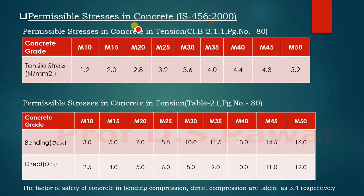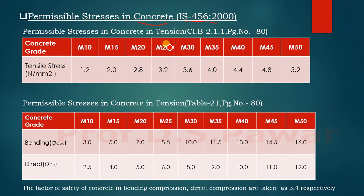These are the permissible or allowable stresses given in IS 456-2000. For concrete, the permissible stresses in tension are as per clause B2.1.1, page 80. Here you can see the grades of concrete: M10, M15, M20, M25, and so on. These are the permissible stresses in concrete for tension.